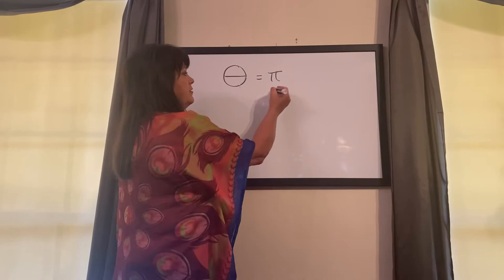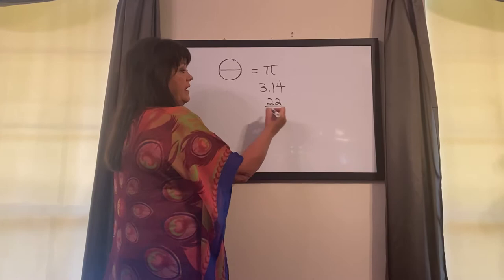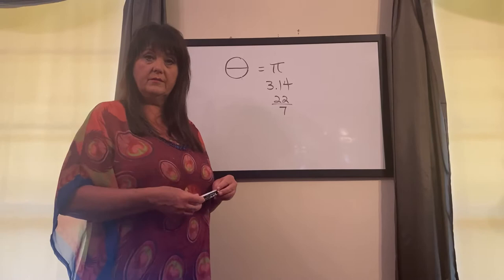Sometimes we use 3.14, sometimes we use 22 over 7, and sometimes we use the pi key on the calculator. But for the ones that we're going to do today, we're going to use either pi or we're going to use 3.14 and every once in a while 22 over 7.